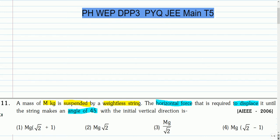This is the first question. A mass of m kg is suspended by a weightless string. The horizontal force required to displace it until the string makes an angle of 45 degrees with the initial vertical direction is — you can pause the video and attempt this question.